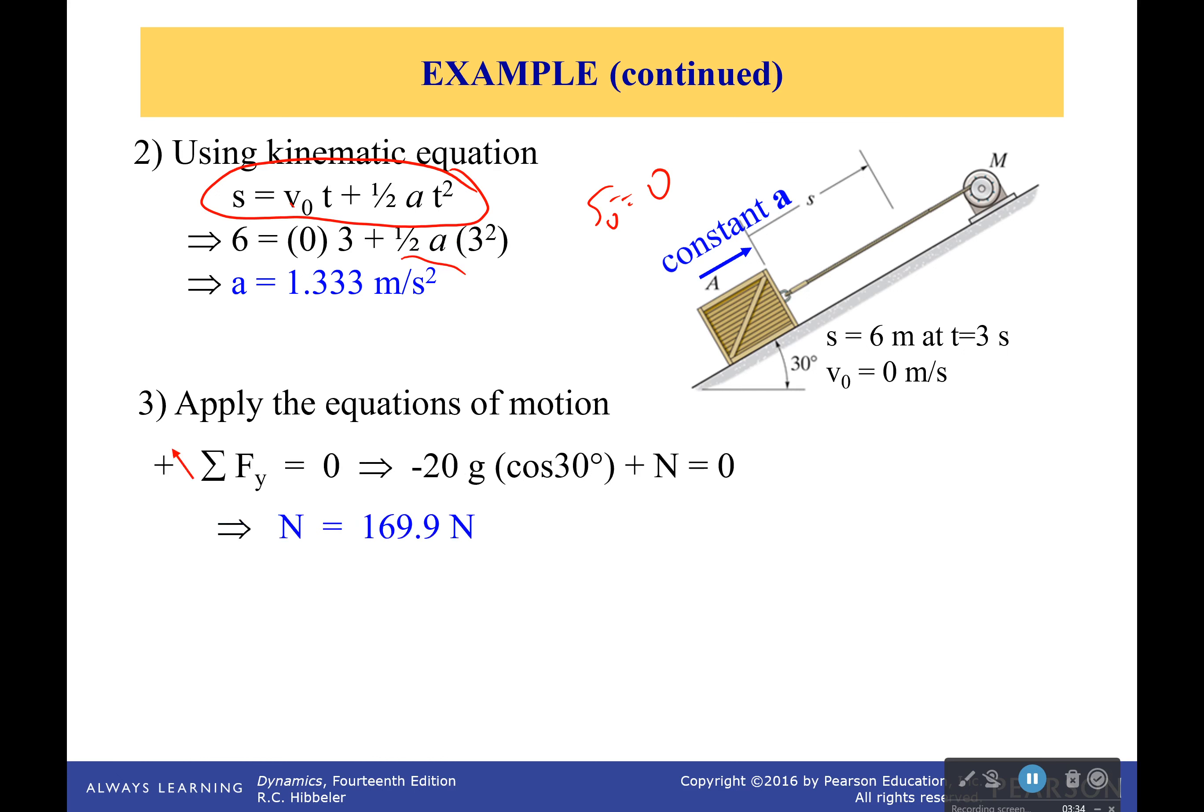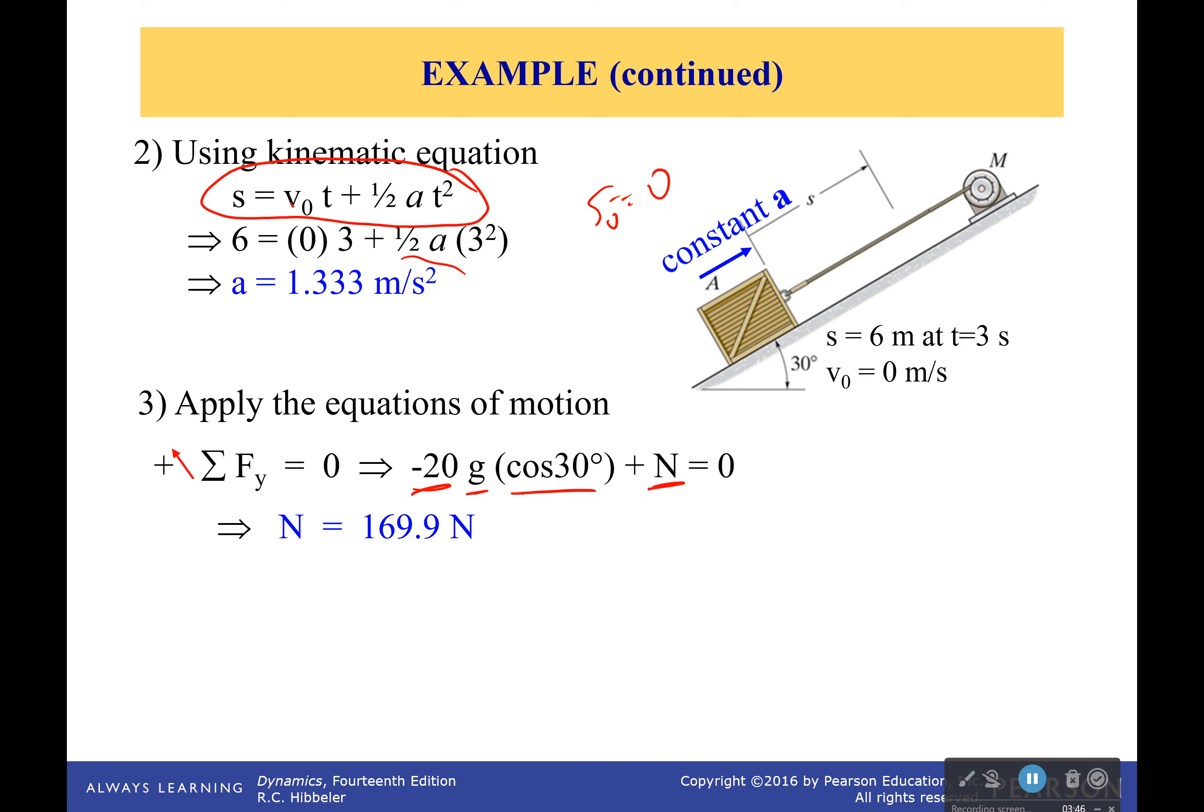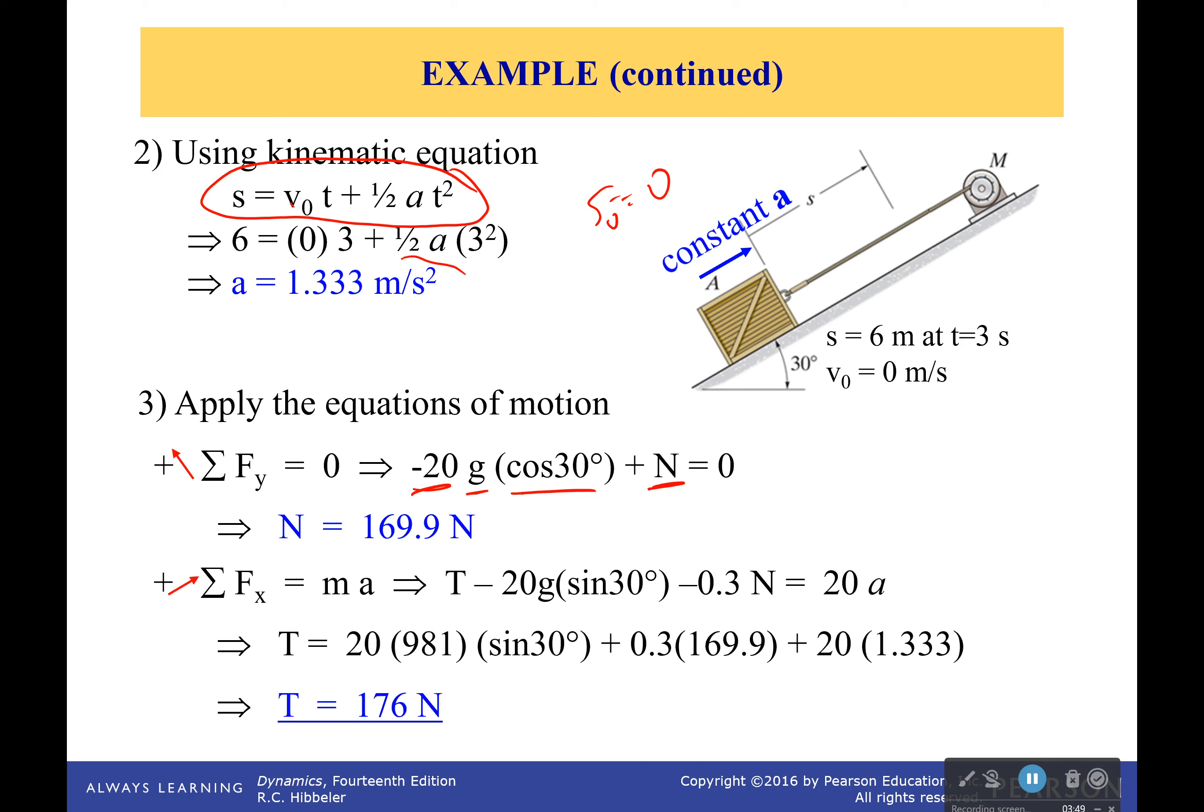Now I can apply the equations of motion. I come back here. I already knew what the forces in the y direction were. So I had my 20, I had my gravity, cosine 30 is going to be equal to my normal force. So normal force was 169.9 newtons. And sum of the forces in x is going to be equal to mass times acceleration because it is not going to be stationary here. Only in my y direction do we have all of our forces summing to 0. In the x direction all the forces are going to sum and equal mass times acceleration.